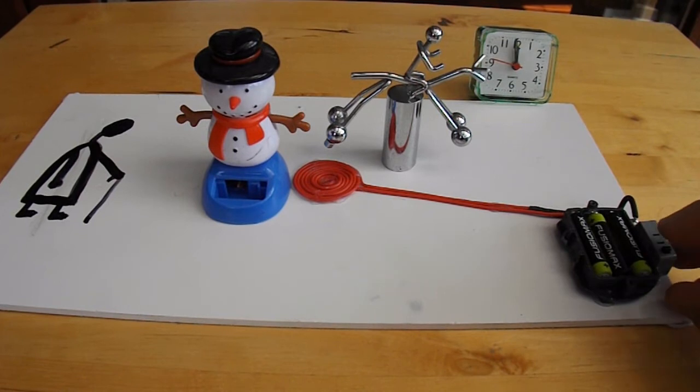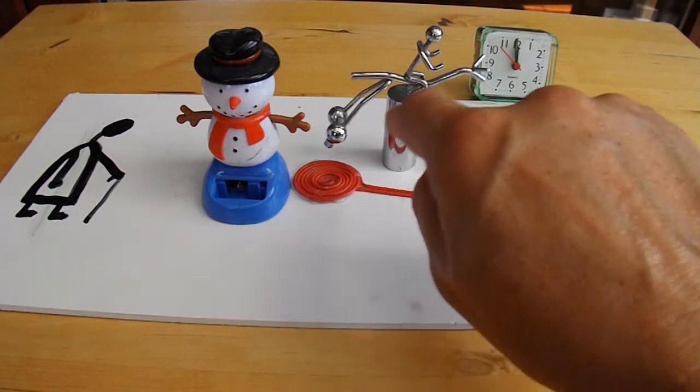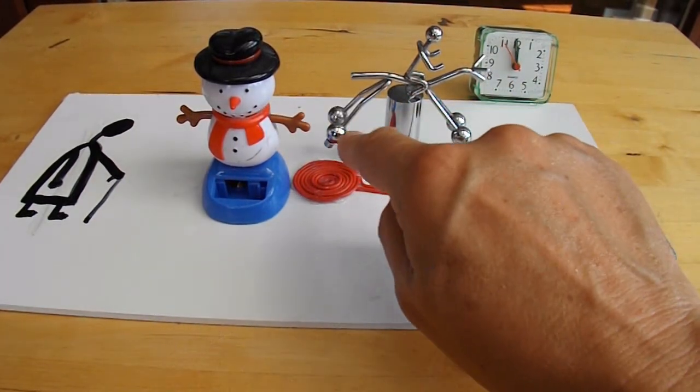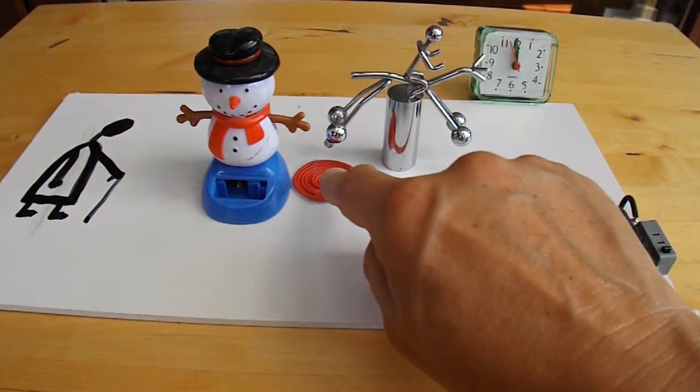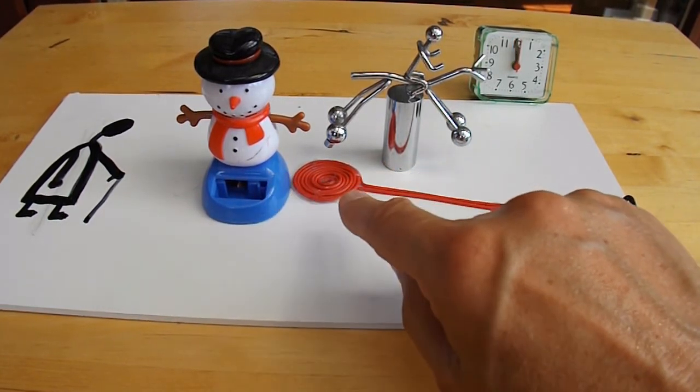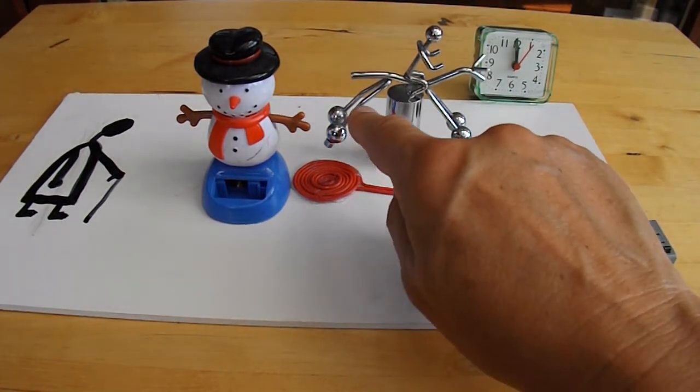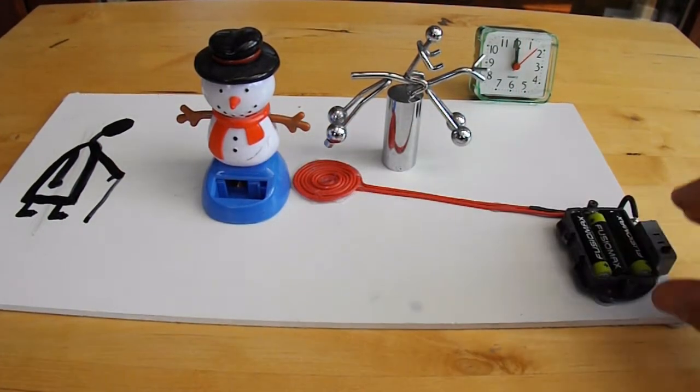So if I give it a few pulses of current to repel this magnet, that makes him rock, and him rocking starts that one rocking. Obviously the current flowing through there probably affects this guy as well. But once I've stopped, it's just the interaction between that magnet and the magnet inside of him.